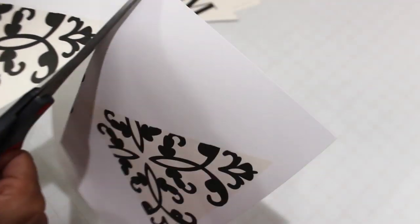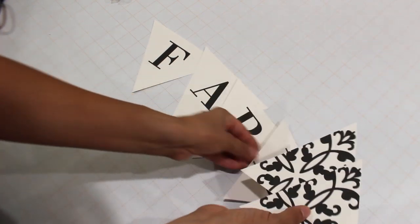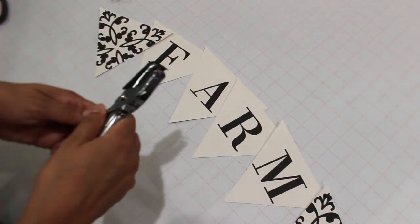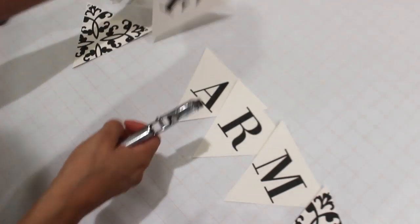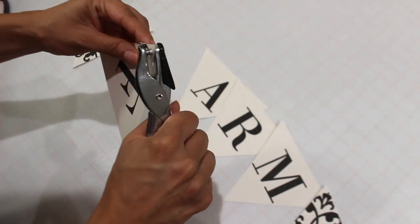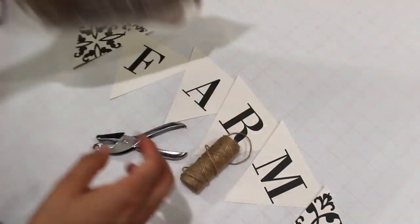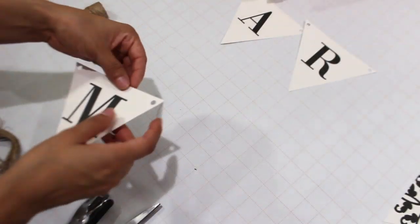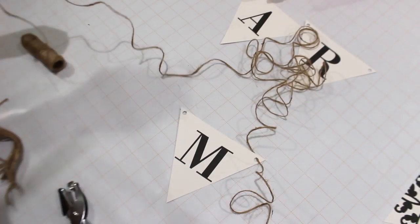Now that everything is cut out, I'm gonna be using my hole puncher, and I'm doing that of course to hang it up. I'm just gonna be using some Dollar Tree twine for that.